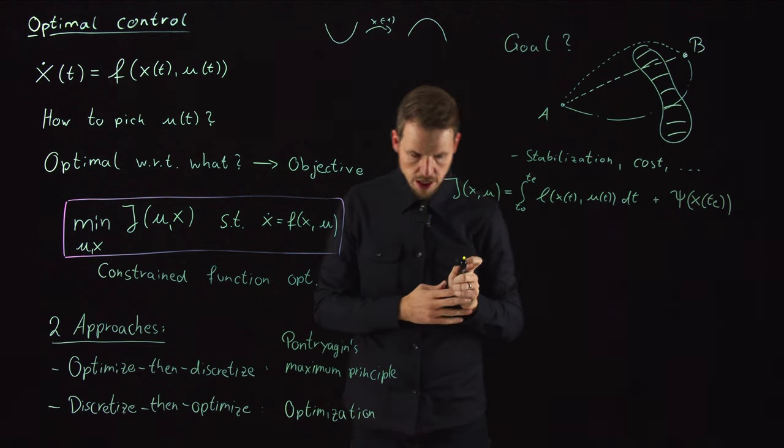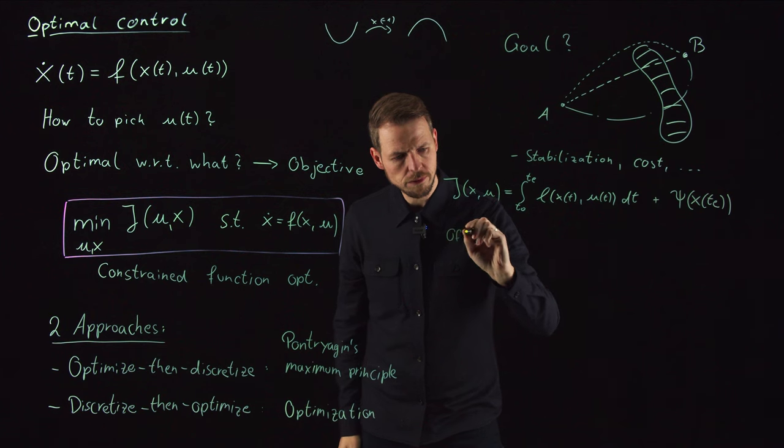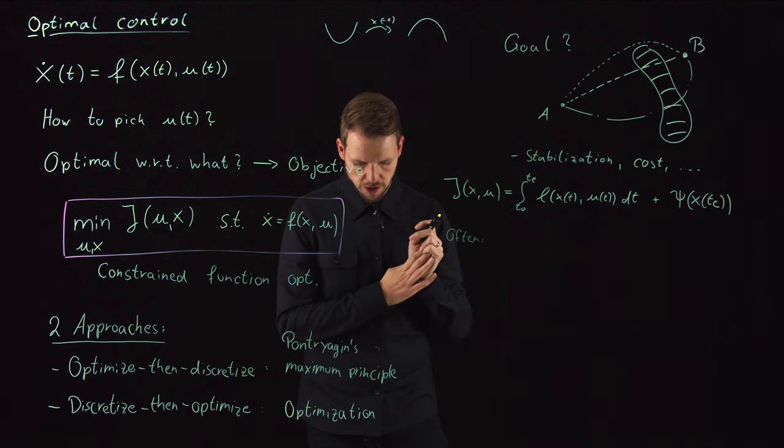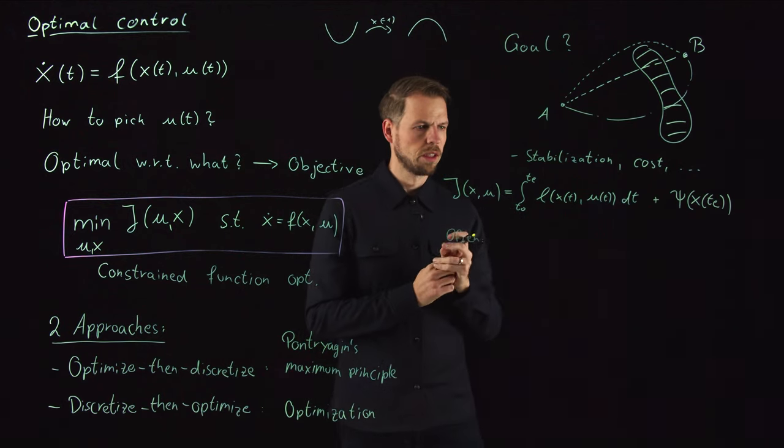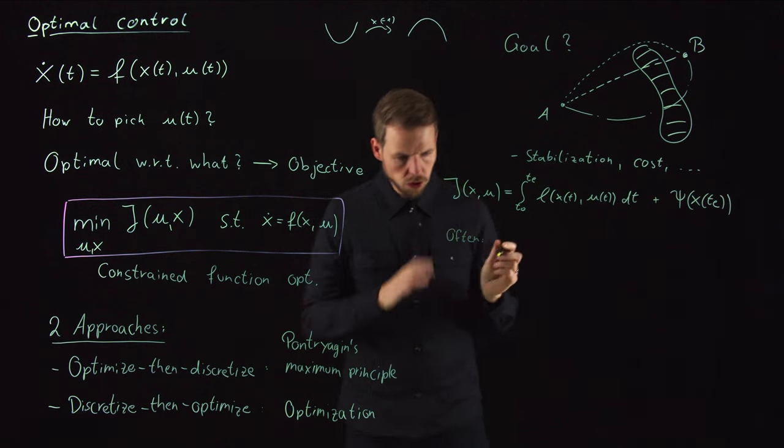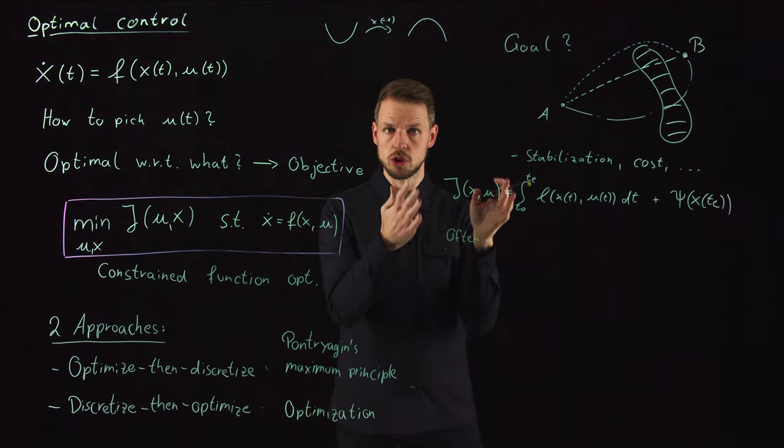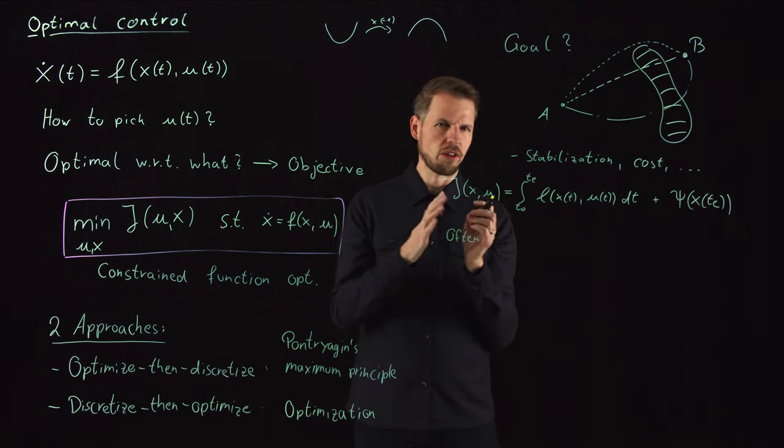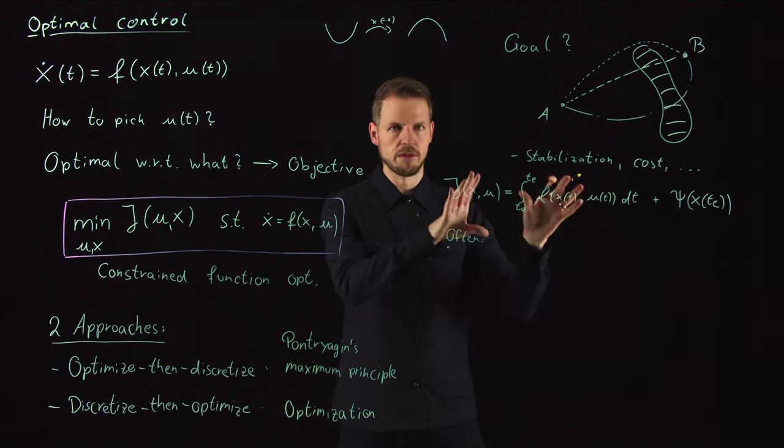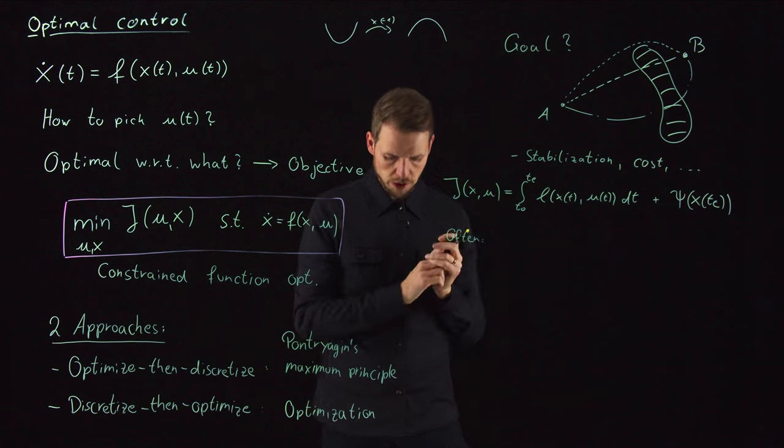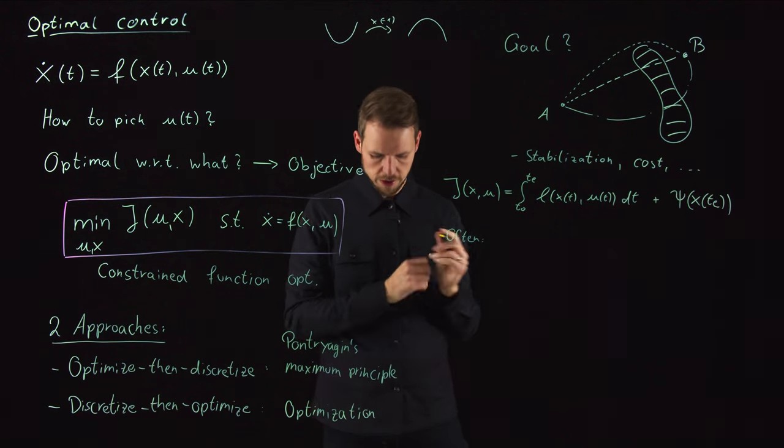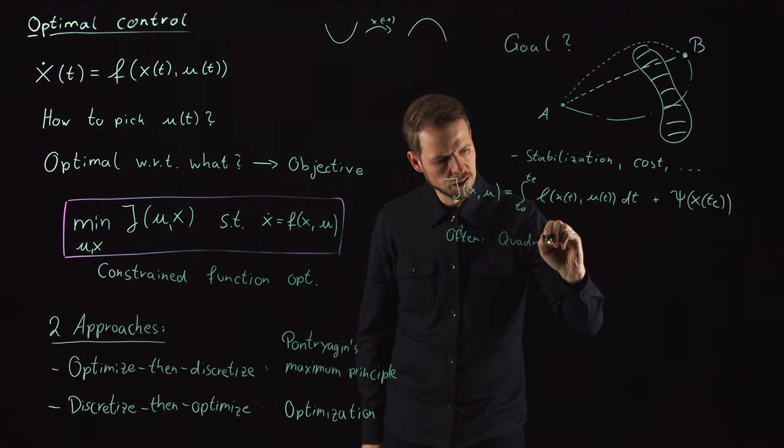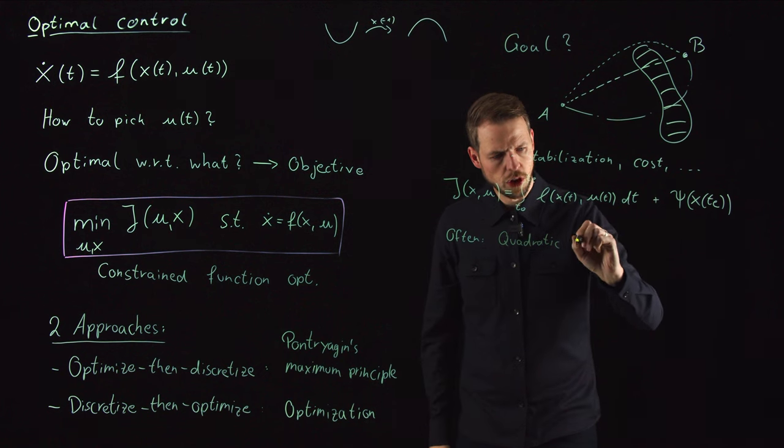What you oftentimes do is formulate this with quadratic cost functions or quadratic terms in the state. We don't have to do this—we need to ensure it's bounded from below so we have a minimum. Differentiability is very helpful to use gradient methods. We're very free in picking this. However, what's frequently done for computation purposes is to pick a quadratic term of tracking type.